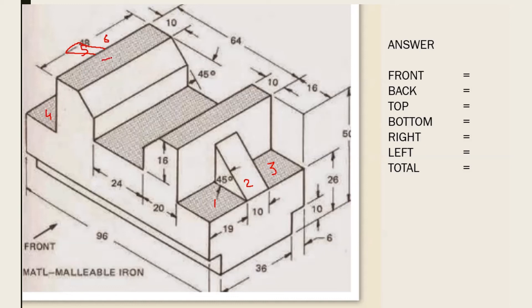Then the top surface seven. This slanting one we have to take as a top surface — which is eight. Then this nine. Then this slanting part, counted as top surface ten. Then this one eleven. So total there are eleven top surfaces: three on the right side, three on the left — so six — then seven, eight, nine, then this slanting part ten, and this one eleven.